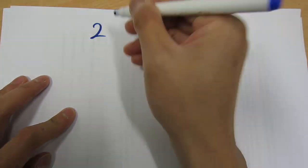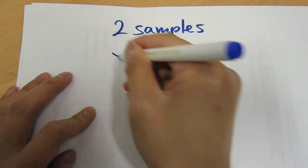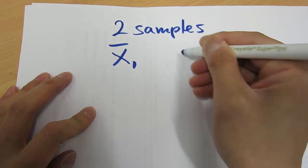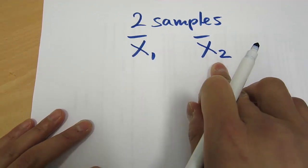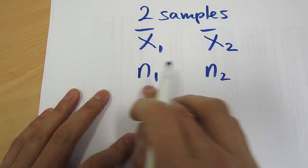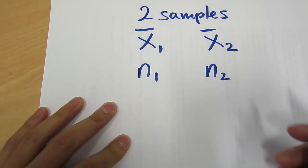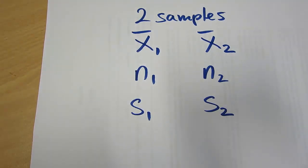What happens if we have two samples and we calculate the means for each sample and we want to compare whether the means are equal or whether they're not equal? We would use a t-test for two populations. That occurs when we have two samples and we've calculated the mean for each sample — sample one and sample two. We also have N1 and N2, since each sample could be of different size, and you also estimate the sample standard deviation for each sample.